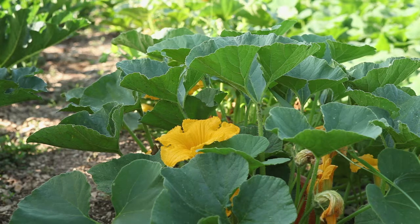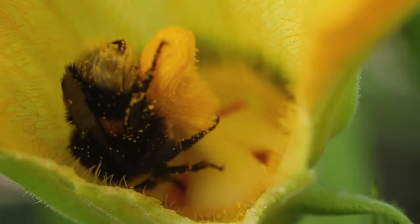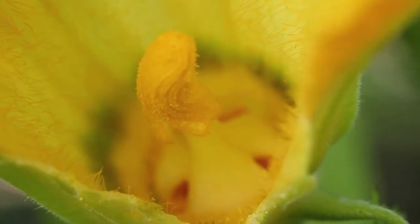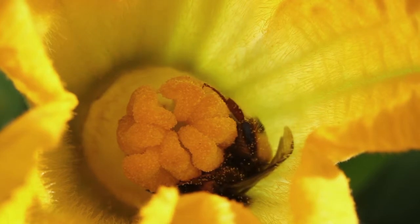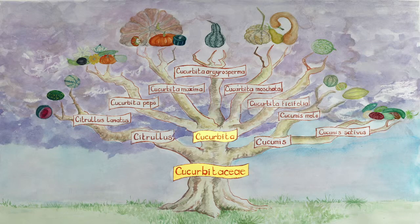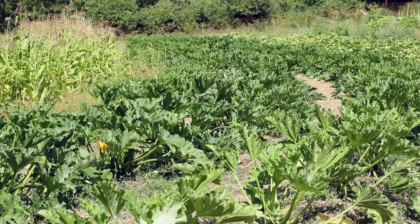However, cross-pollination is more common between different plants of the same variety and within the same species. Insects, above all bees, pollinate squash flowers. Cross-pollination happens between Cucurbita argyrosperma and Cucurbita moschata, and only rarely with the wild Cucurbita pepo. It is therefore generally possible to grow two species of squash next to each other without there being a risk of cross-pollination.